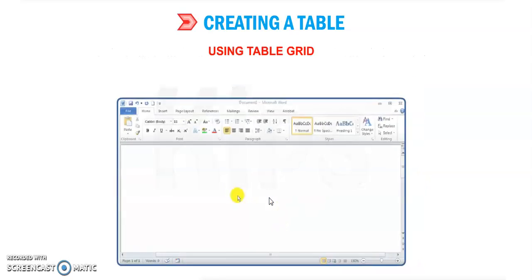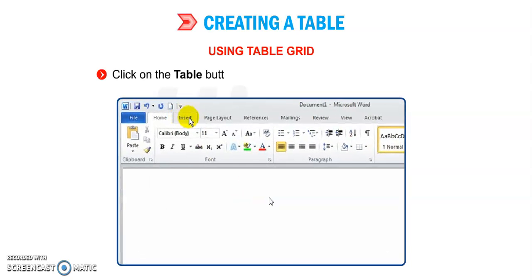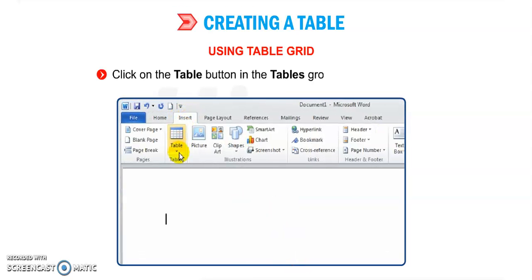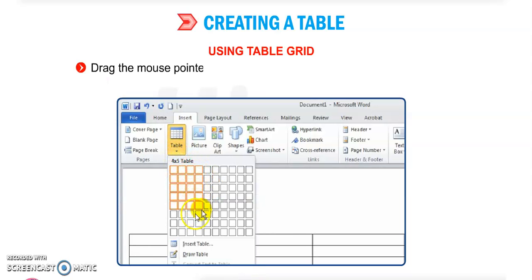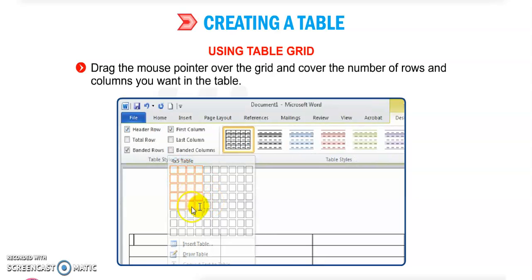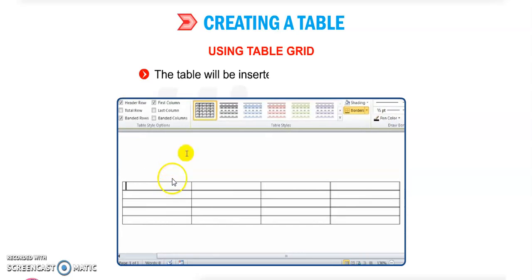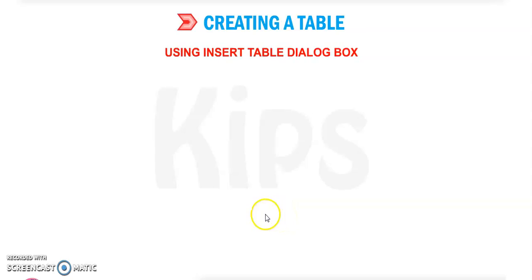Using the Table Grid is another way to create a table. First click the Insert tab, then click the Table button in the Tables group on the Insert tab, and drag the mouse over the grid to cover the number of columns and rows you want. The table will be inserted in the working area.